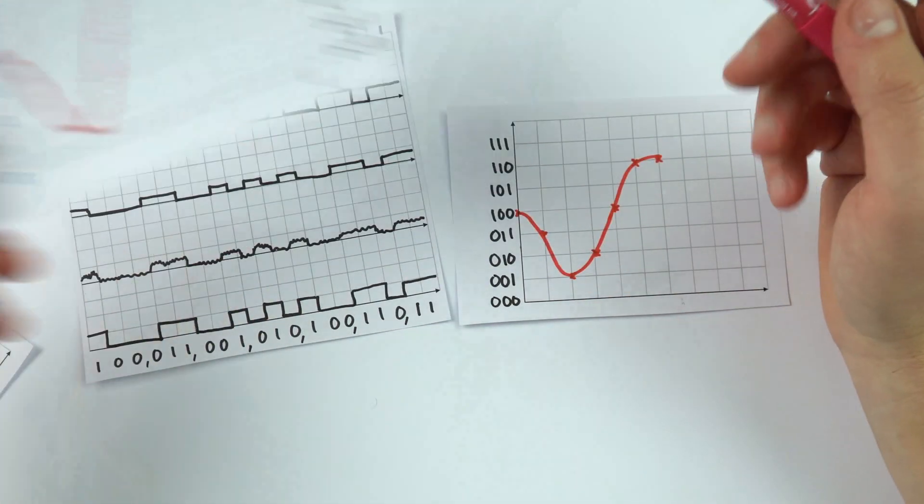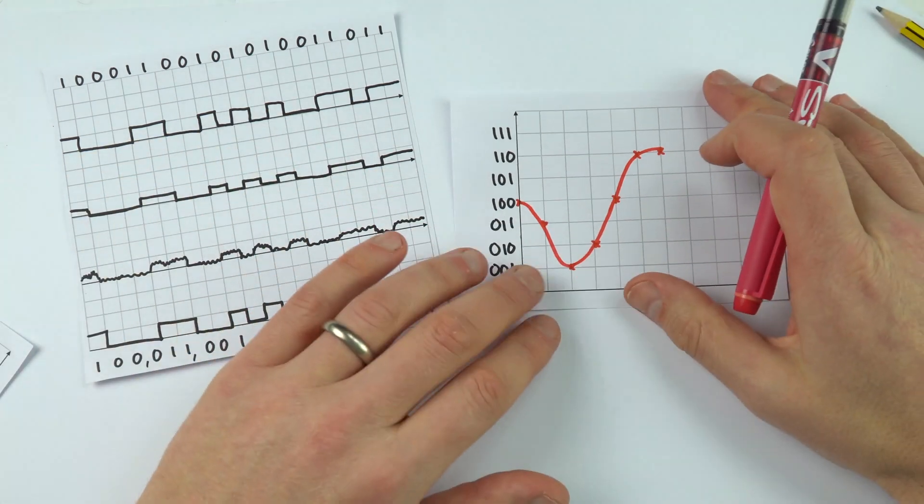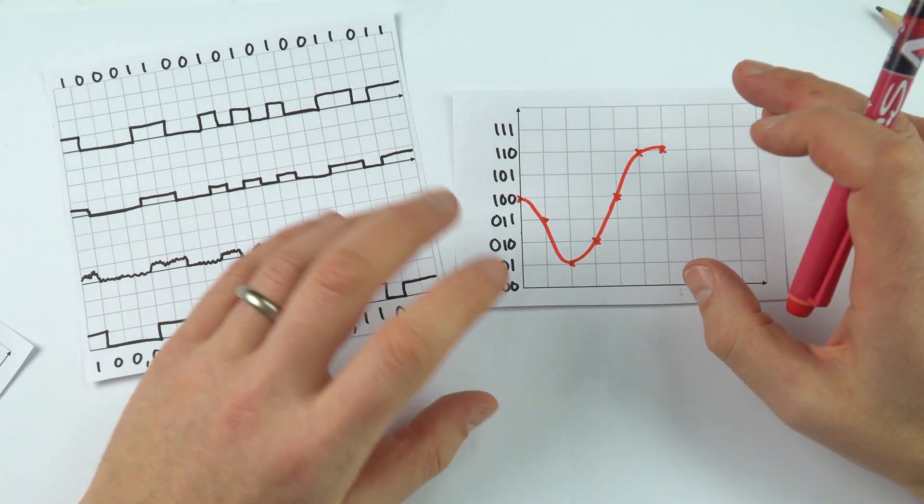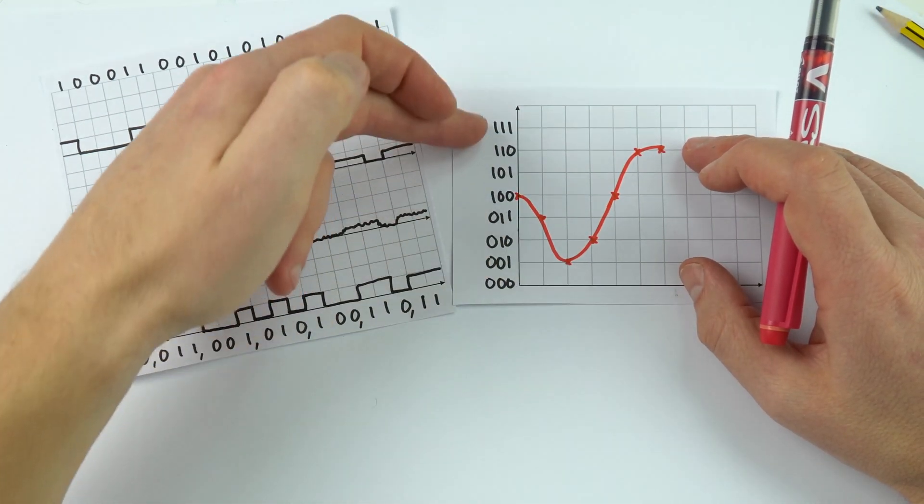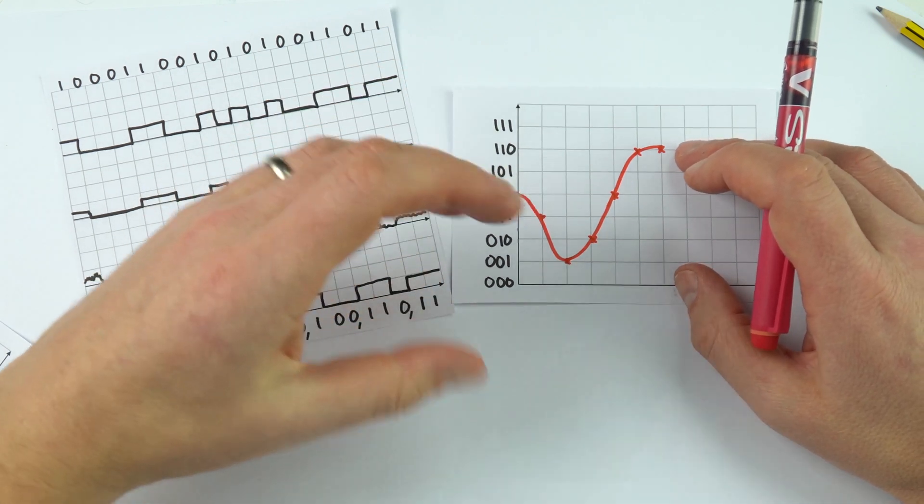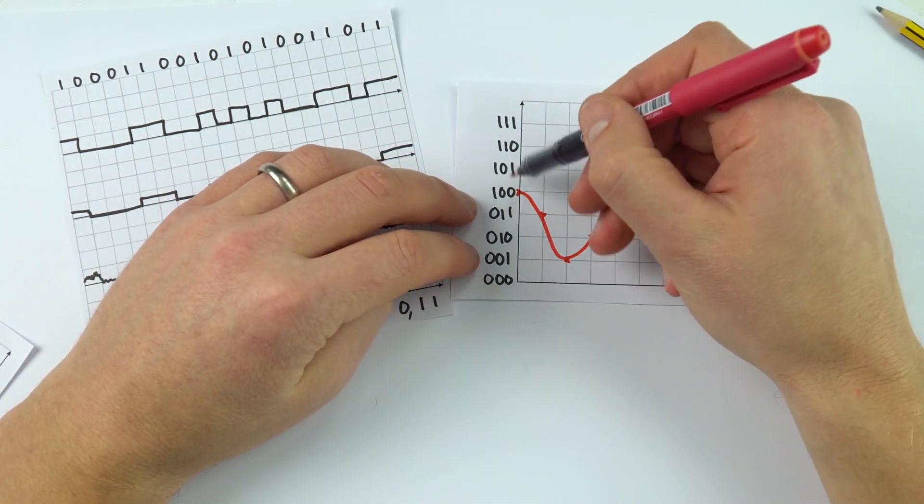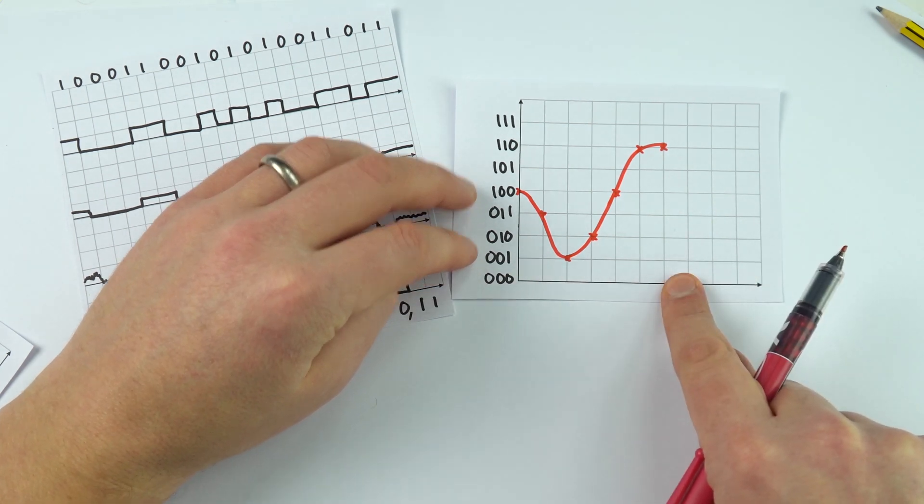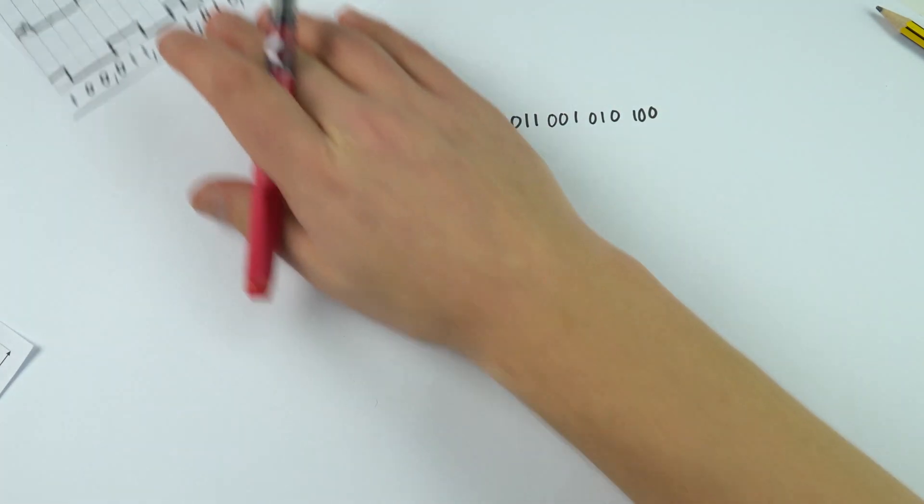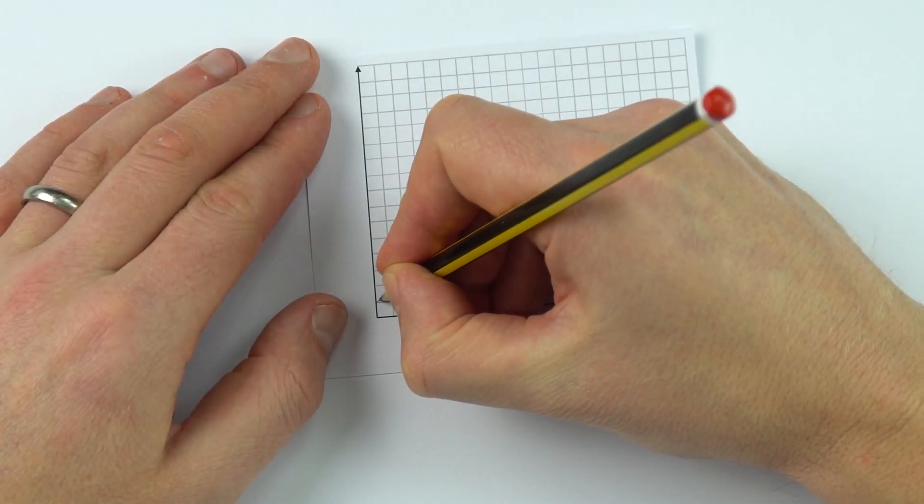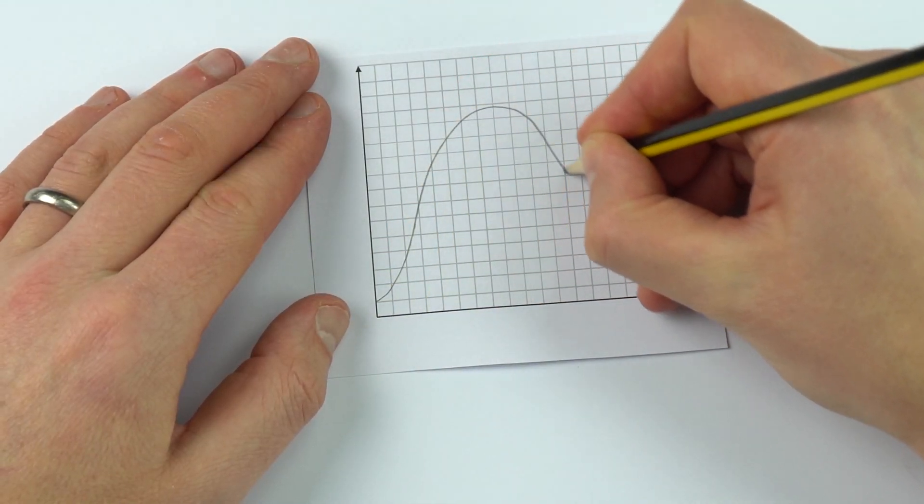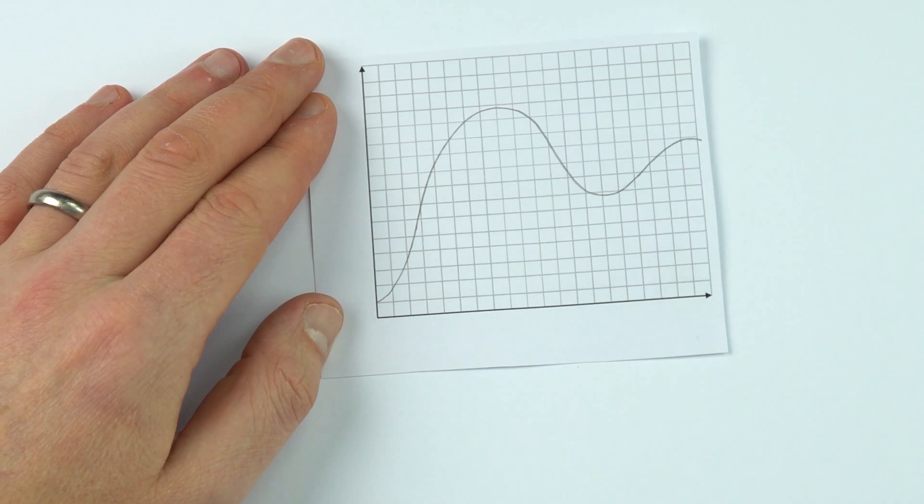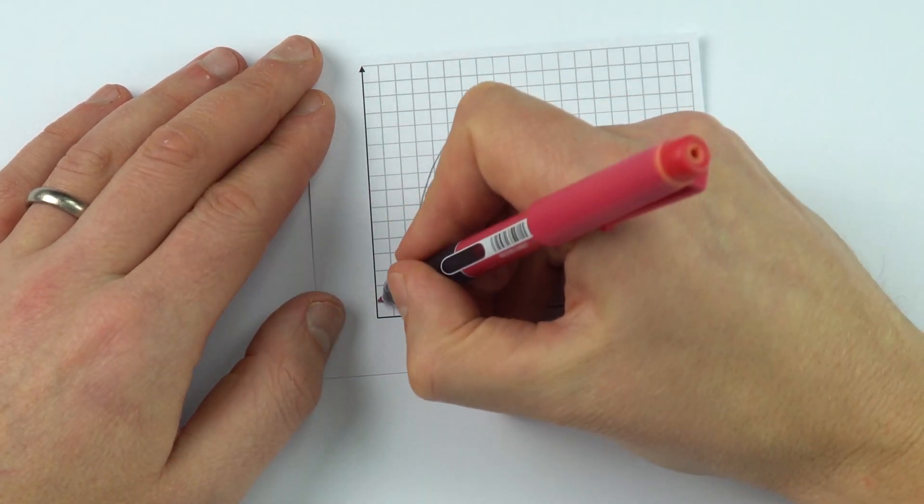We can go from analog to digital and then from digital back to analog. One of the advantages here is that we don't actually have the noise from that original signal. There are ways that we can improve this. We can have a different number of levels up the side so we can have a greater resolution and also we can take the samples more often.